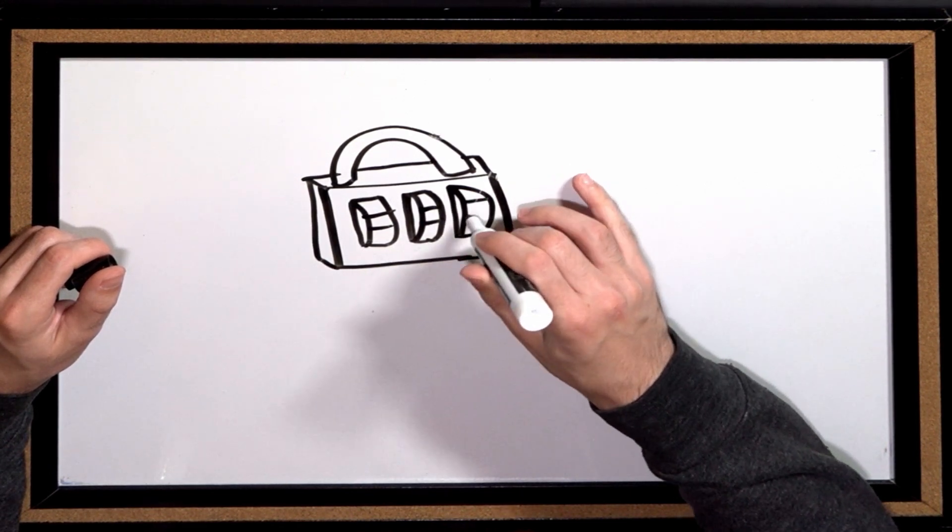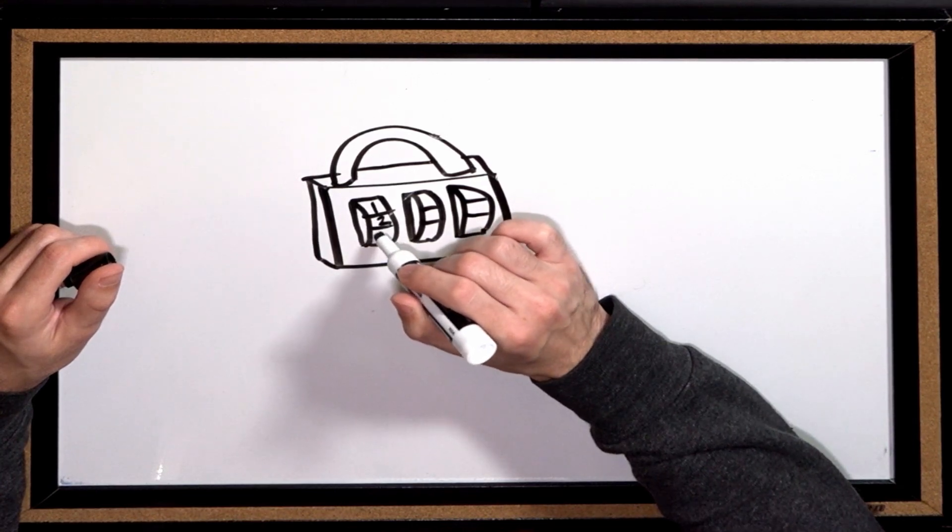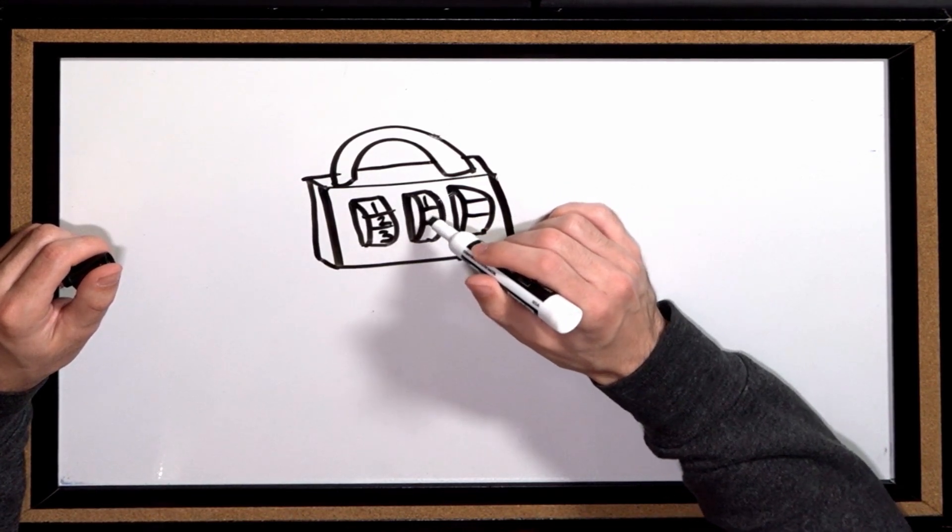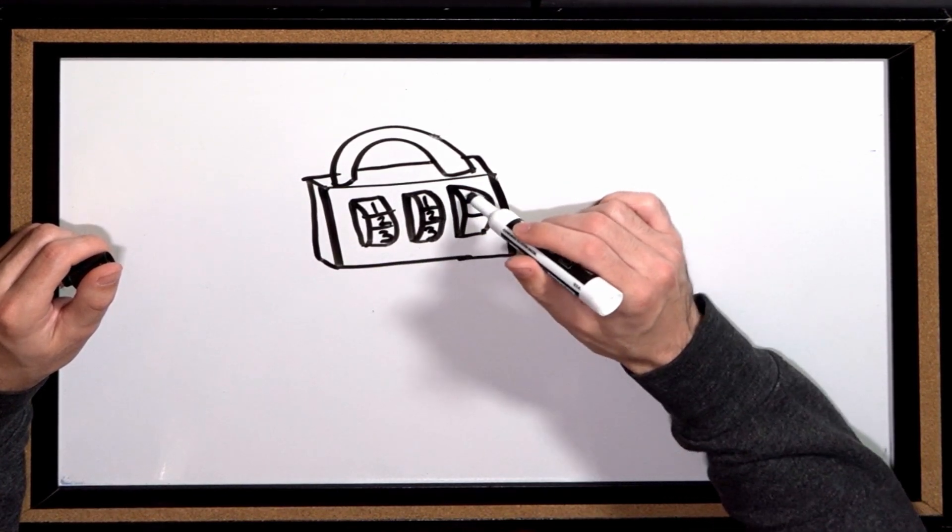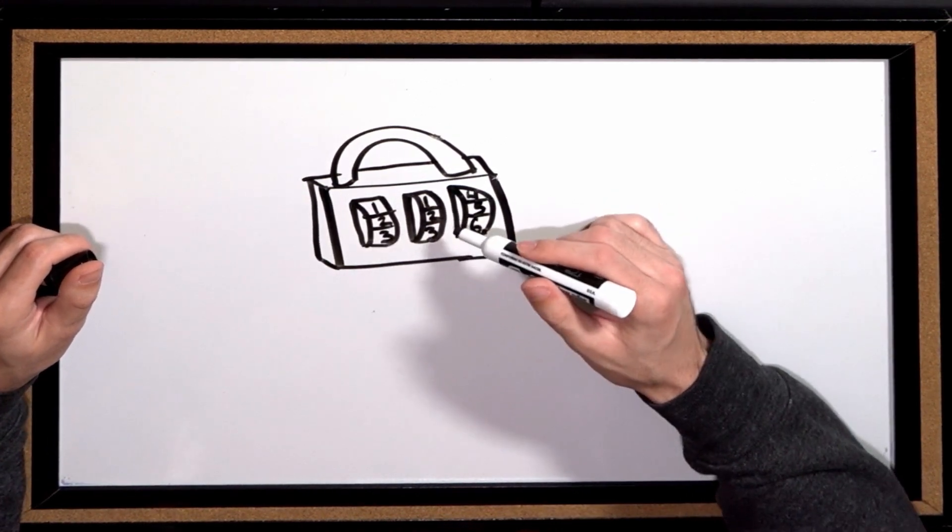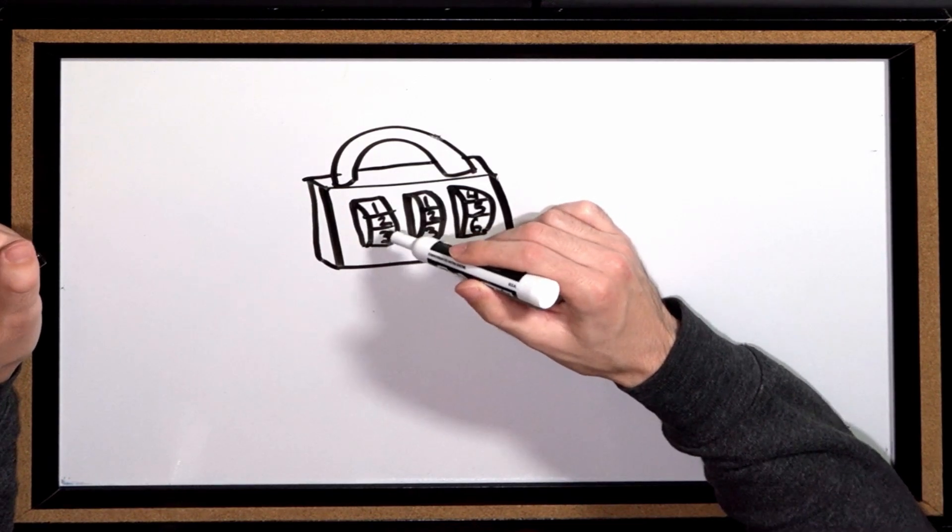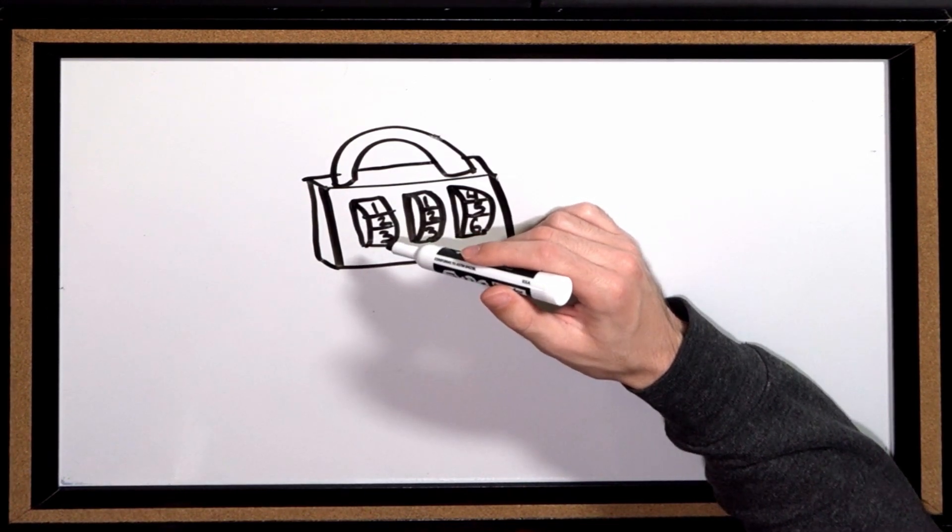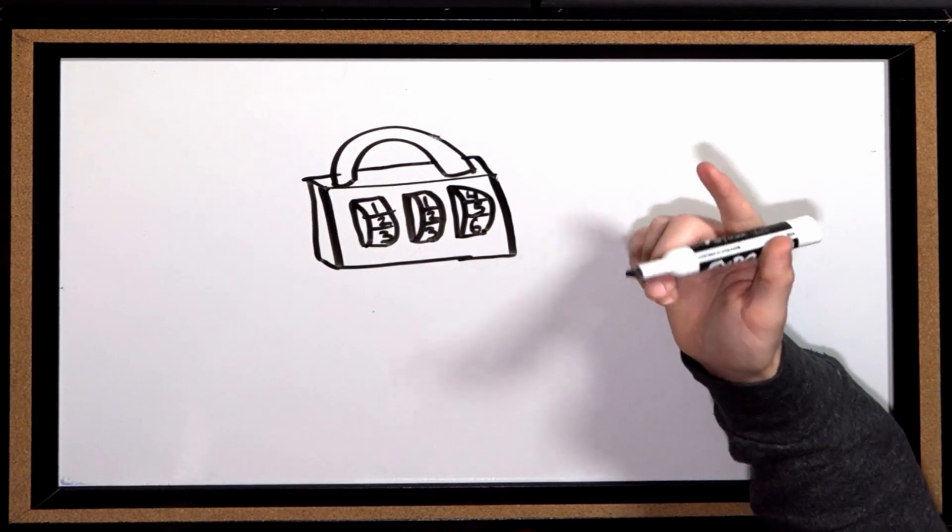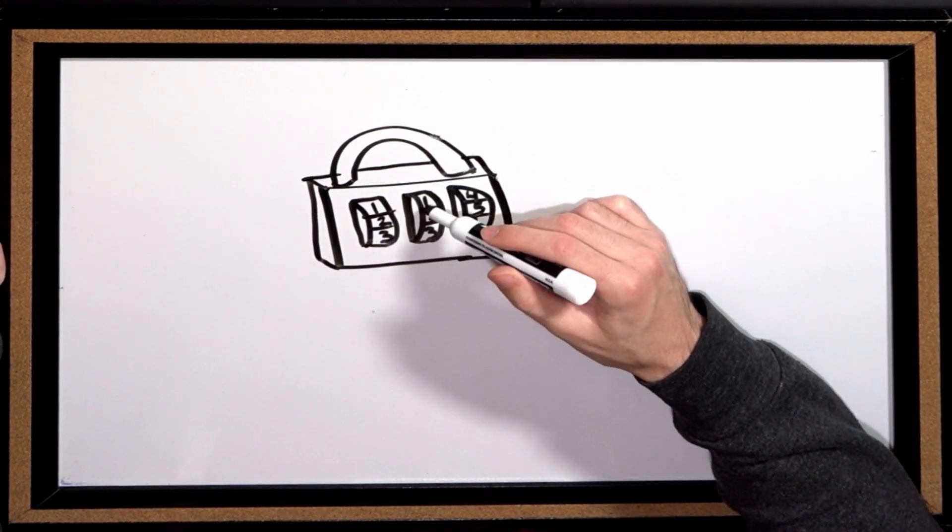So this is a combination lock, right? And each one of these little spinny things can be set to any one of ten numbers. So you can spin this and this could be any number, one through ten, or actually zero through nine, but ten different numbers that this could be. And this is ten different combinations.